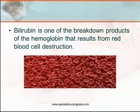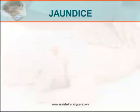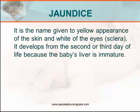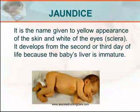Bilirubin is one of the breakdown products of hemoglobin that results from red blood cell destruction. Jaundice, as a pathognomonic feature of hyperbilirubinemia, is the name given to a yellow appearance of the skin and white of the eyes or the sclera of an infant. It develops from the second or third day of life because the baby's liver is immature.